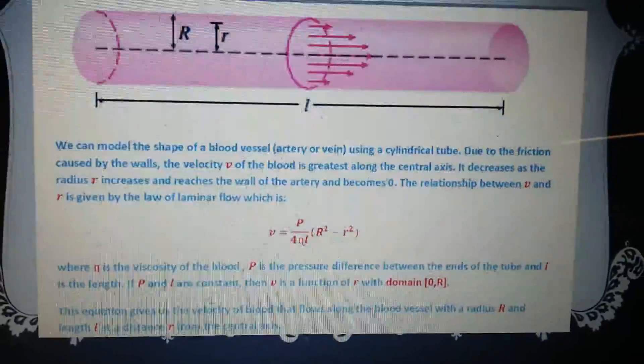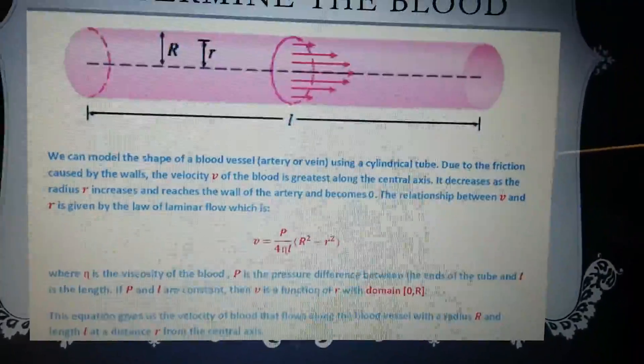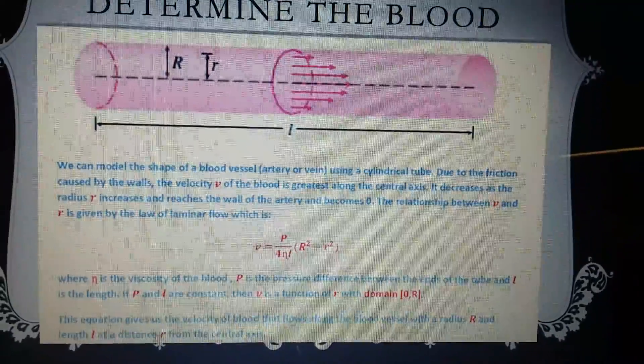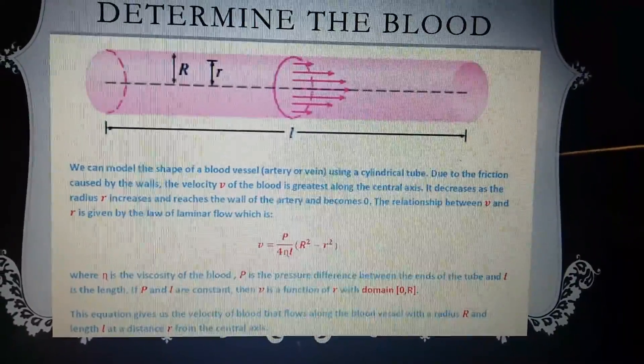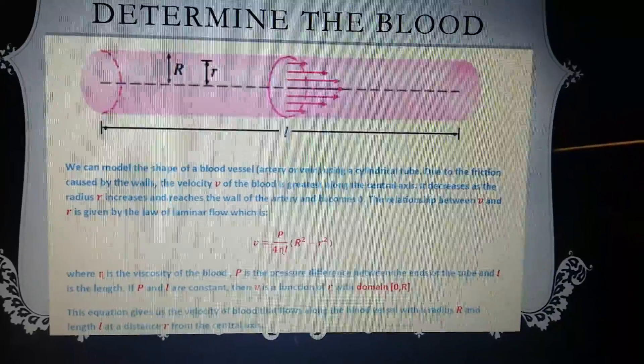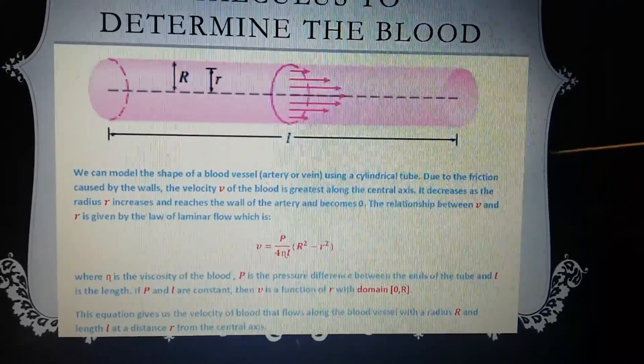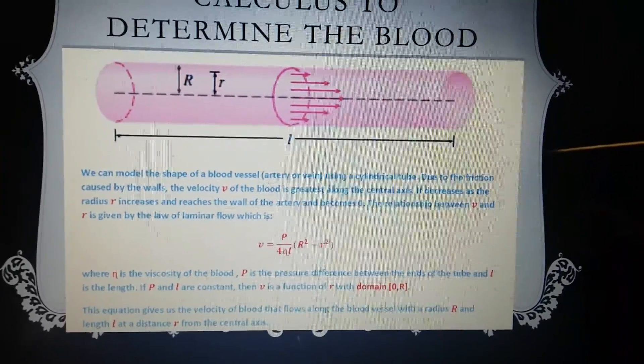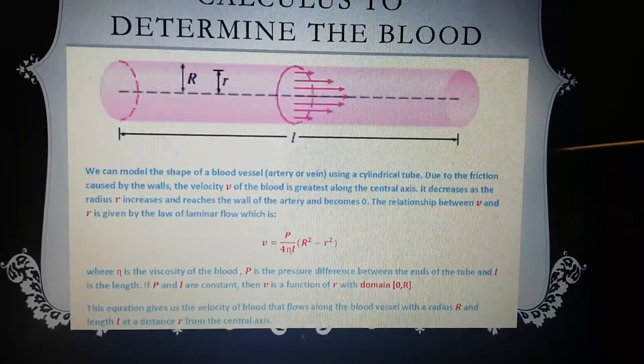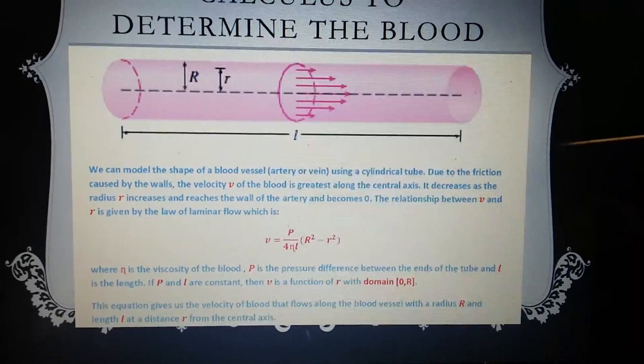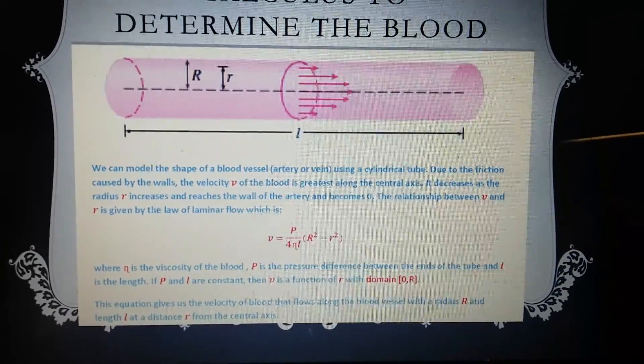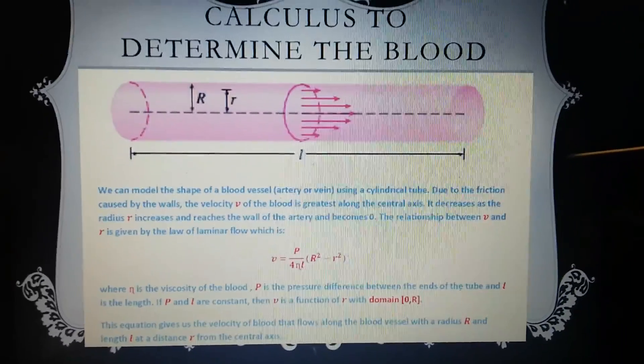When V is the velocity of the blood, P is the pressure difference between the ends of the tube, and L is the length. If P and L are constant, then V is a function of R with domain 0 to R. The equation gives us the velocity of blood flow along the blood vessel with a radius R and length L at the distance R from the central axis.